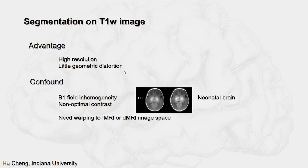For most applications, segmentation is performed on T1-weighted images because the T1-weighted image has high resolution and low geometric distortion. However, there is a confound for T1-weighted image segmentation. It may suffer from B1 field inhomogeneity and may provide non-optimal contrast. For instance, in the neonatal brain, the contrast between gray matter and white matter is not decent. Also, the segmentation needs to be warped to fMRI or dMRI image space, which may introduce errors, because fMRI and dMRI images are typically acquired with echo-planar imaging that is prone to susceptibility artifacts.